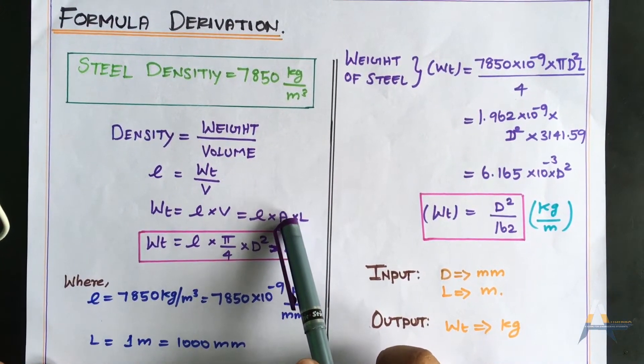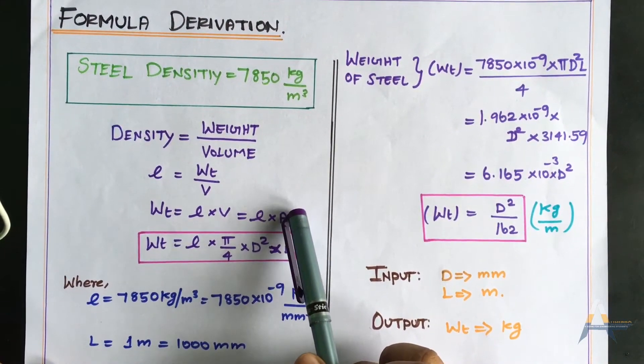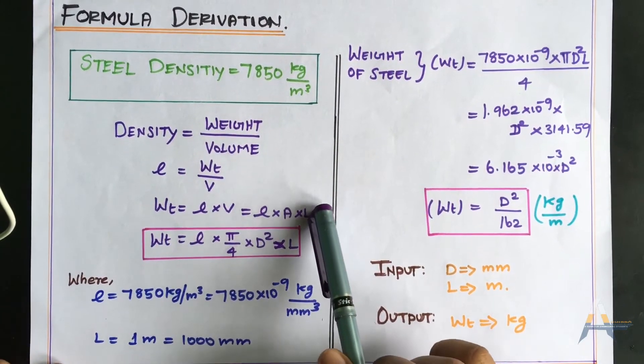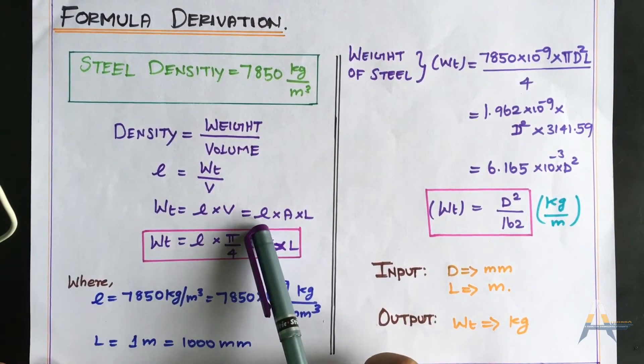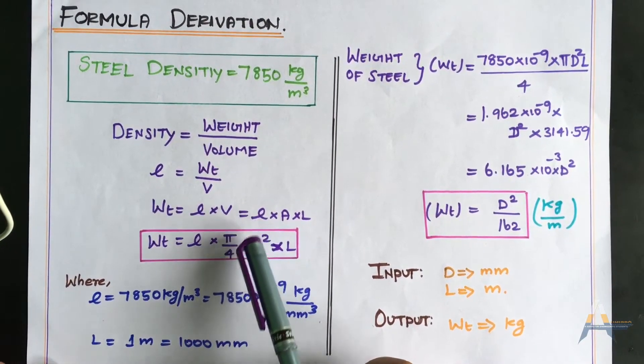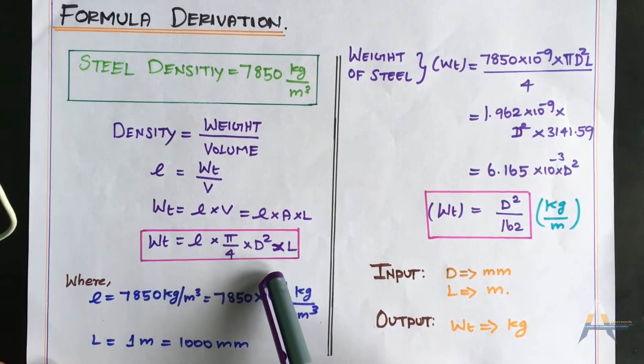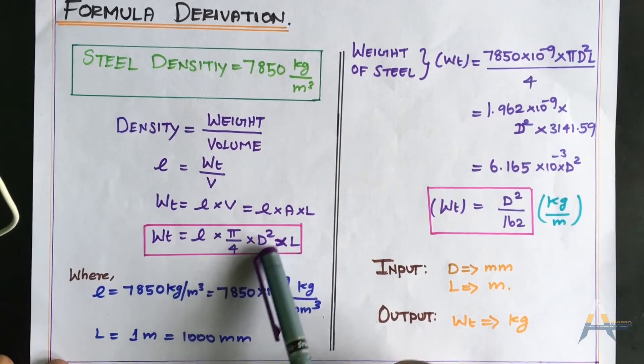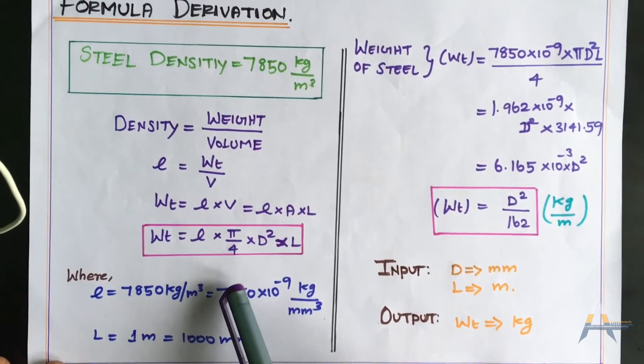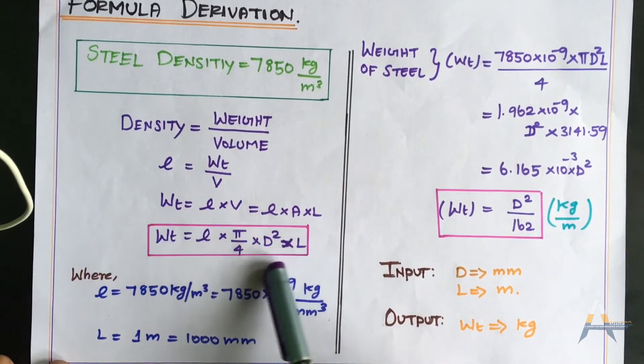The area is based on the diameter of the bar. Bar area times bar length times density of steel. The area is π/4 times D². For a round bar, we use the circle area formula. This is the basic formula for weight of steel.